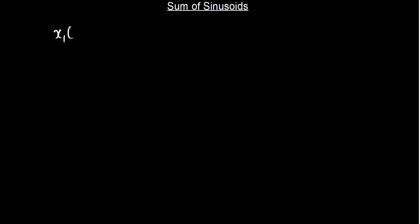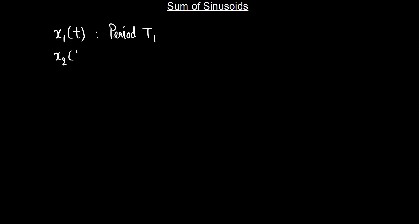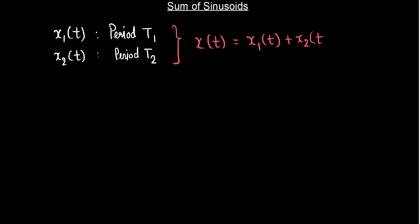In the previous module, we looked into sinusoids — the periodicity of sinusoids for both continuous time and discrete time cases. Let's consider two sinusoids: x1(t), assumed to be periodic with period T1, and x2(t), another sinusoid periodic with period T2. Now let's consider another signal x(t) that is the sum of these two periodic signals x1(t) and x2(t). The question is whether this resultant signal x(t) is also periodic or not.